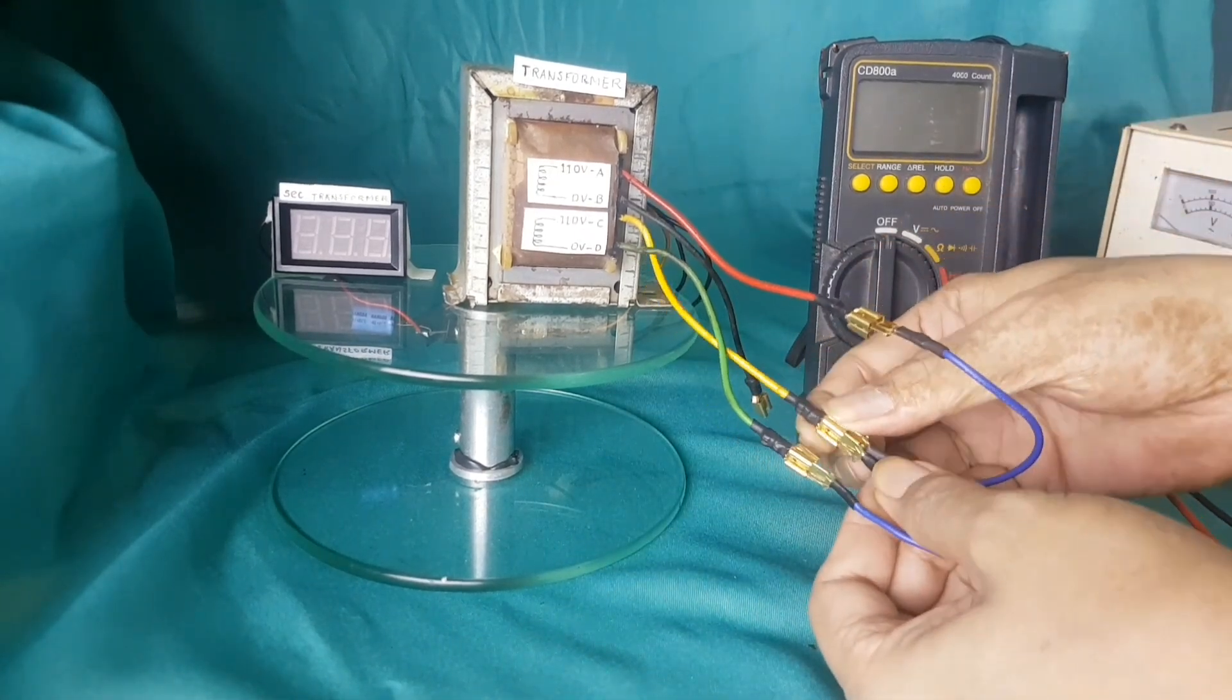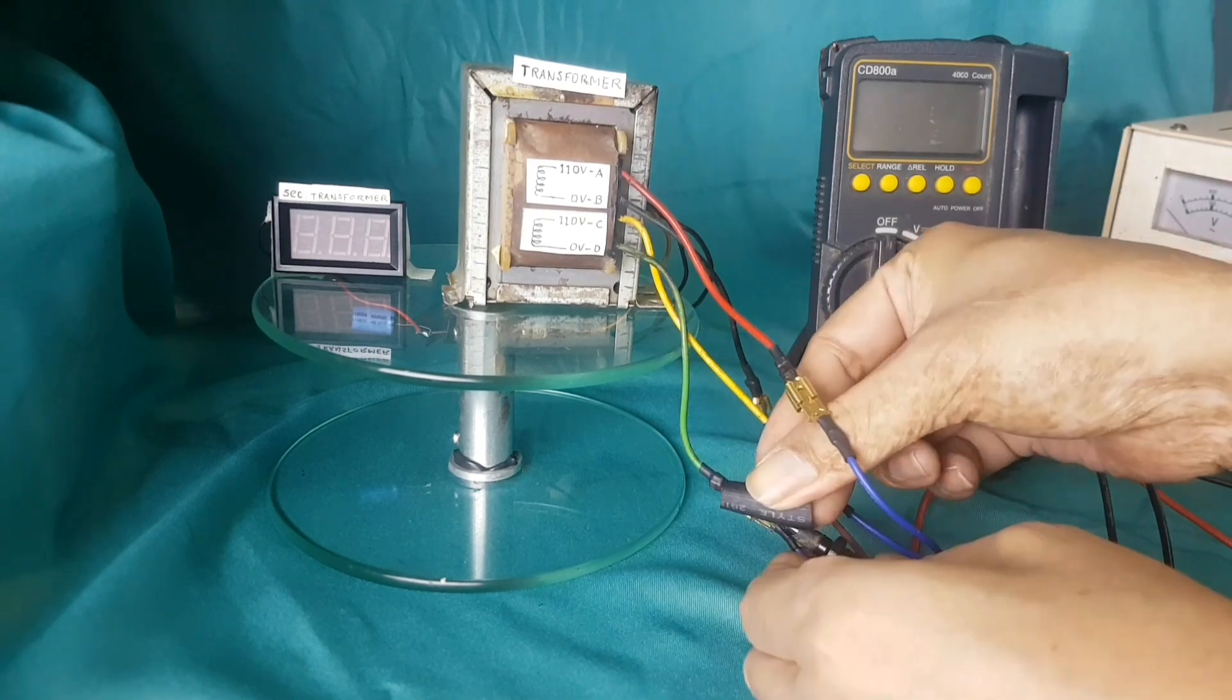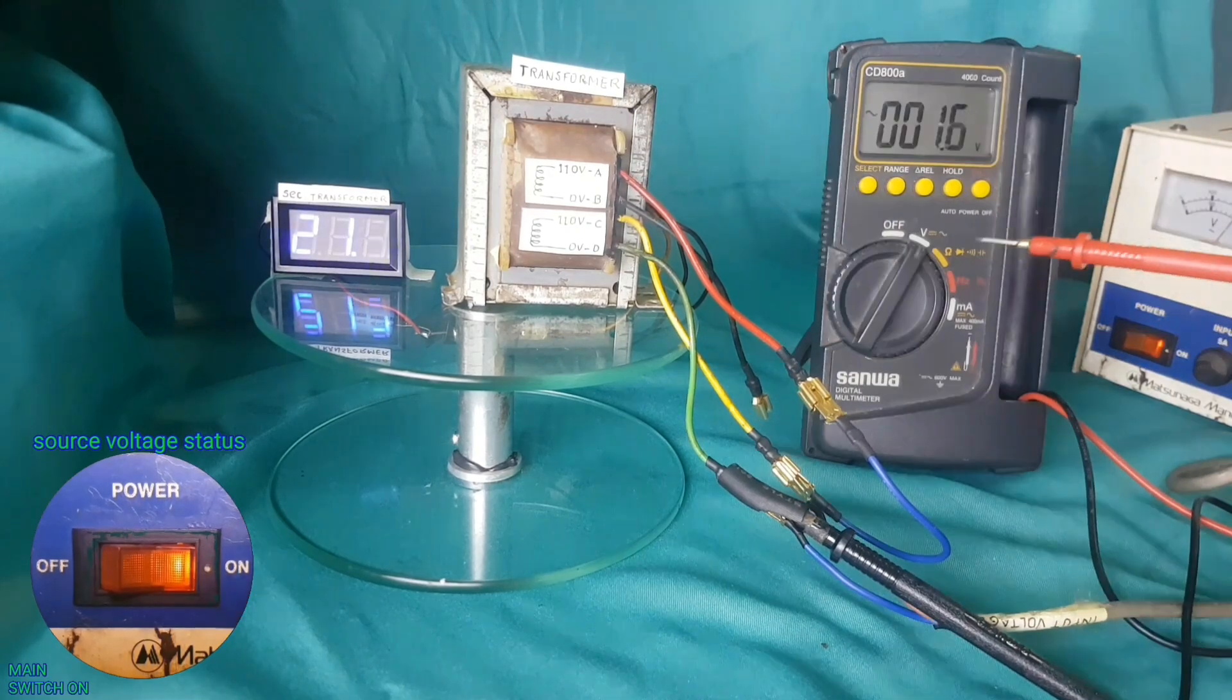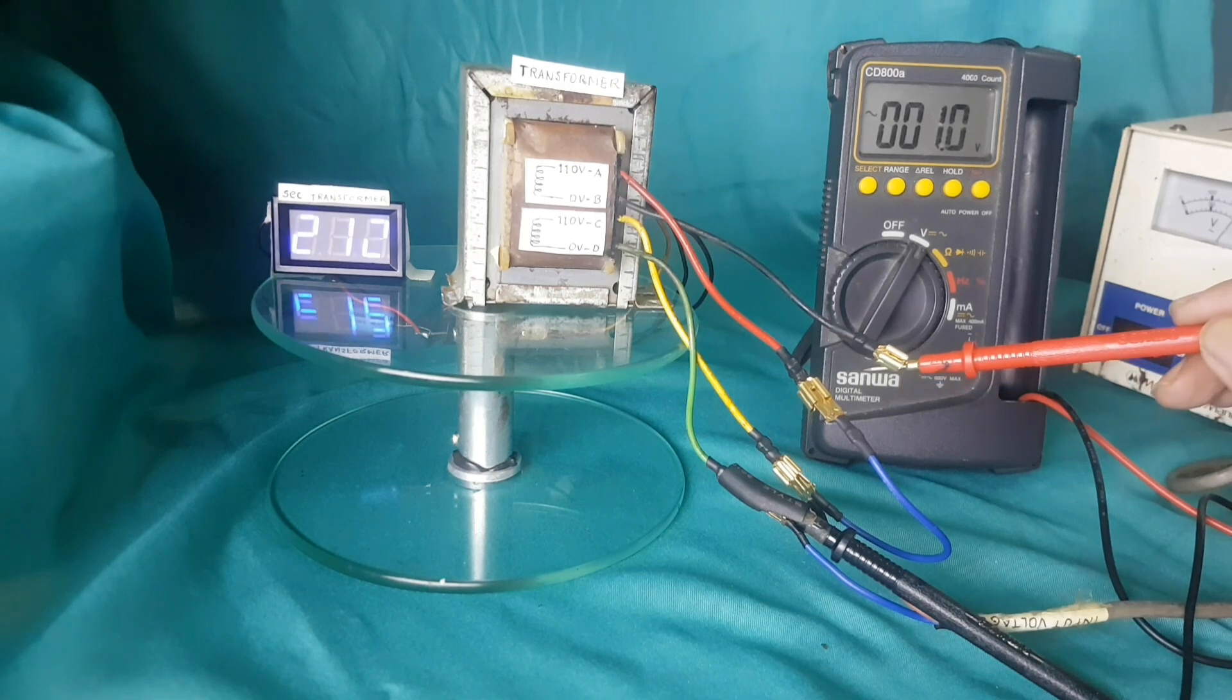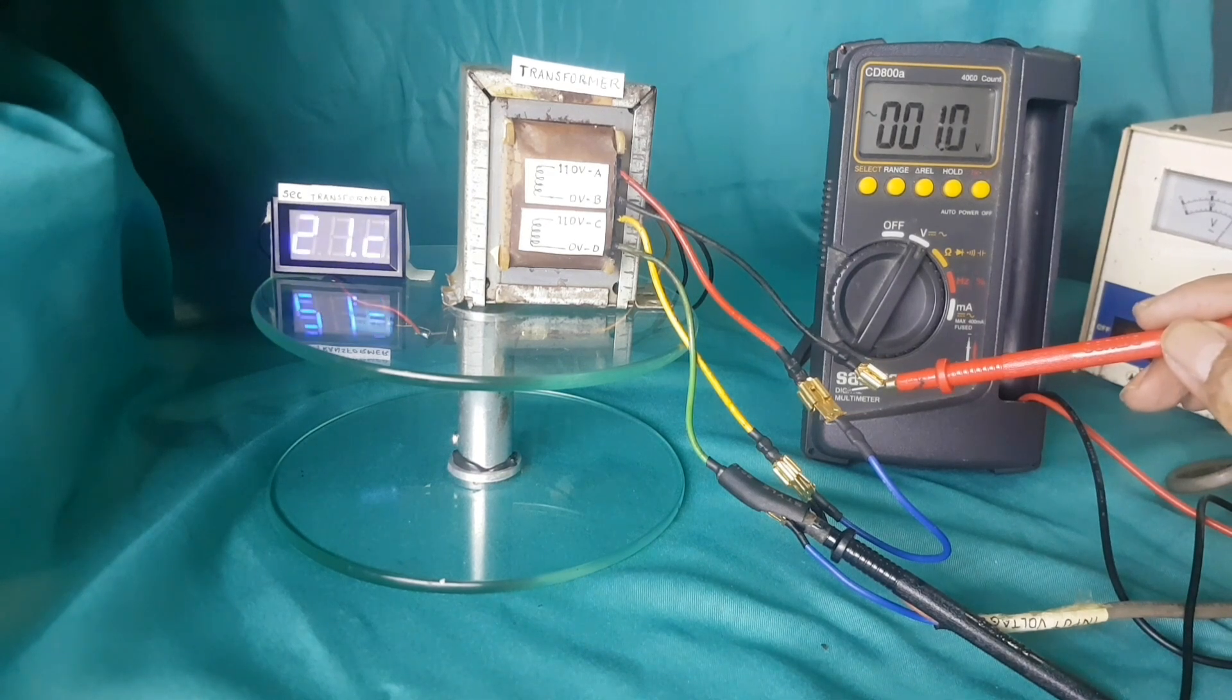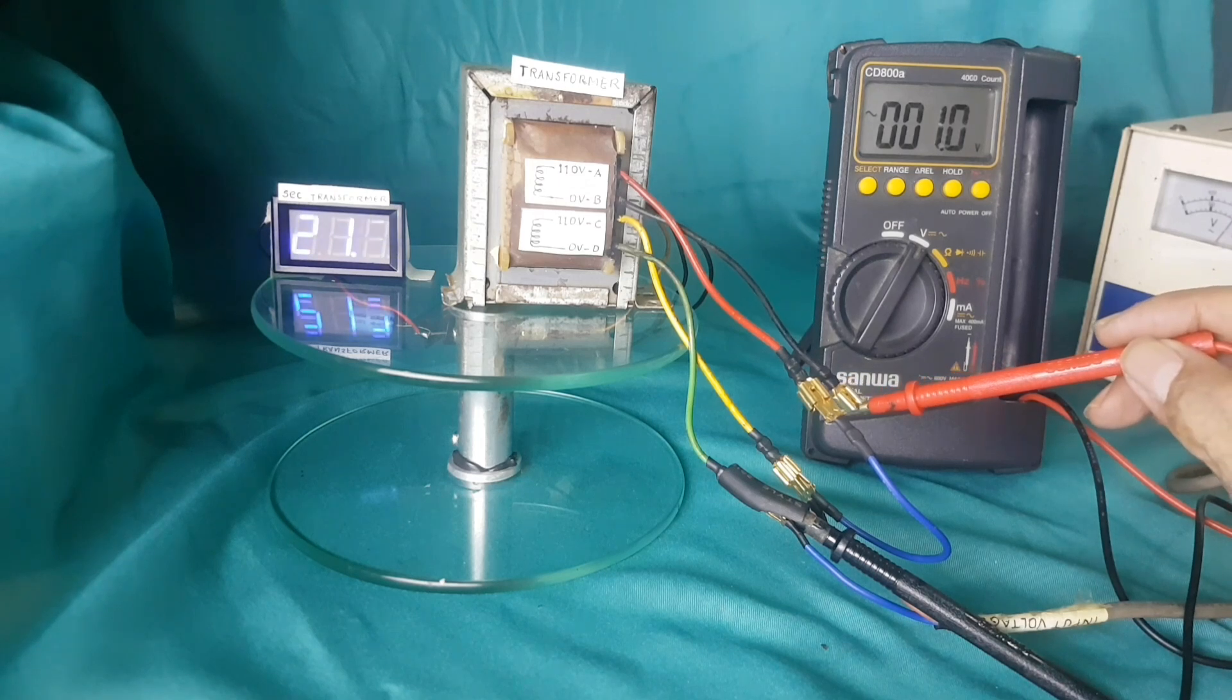Put the digital voltmeter probe to the green wire, add electrical insulation, turn on the main switch. Put the probe of digital voltmeter on the black wire. The voltage on the black wire is very small, one volt. This indicates that the black wire and green wire are in the same place, while the red wire and yellow wire are in the same place.